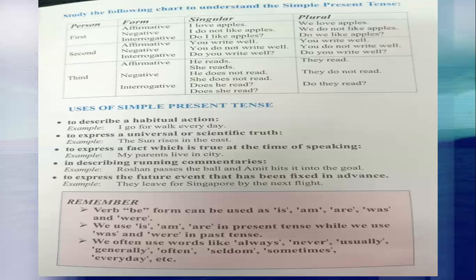Now for second person, you use 'you'. Affirmative: 'You write well.' Negative: 'You do not write well.' Interrogative: 'Do you write well?' For the plural form the sentences remain the same: 'You write well,' 'You do not write well,' and 'Do you write well?'